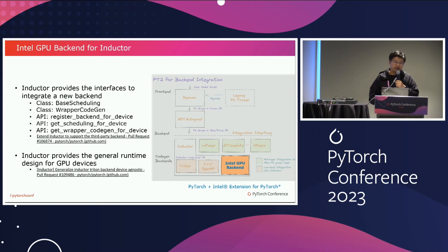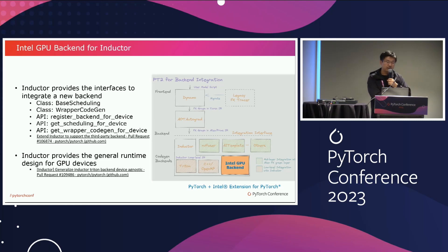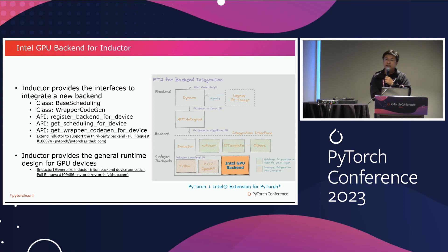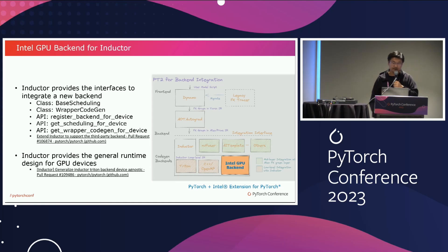Besides the two essential classes, we also provide some APIs to allow the Intel GPU back-end to register to the inductor at runtime, and you can also get the base scheduling and the wrapper codegen classes. Additionally, inductor tries to generalize the runtime design for GPU devices, since inductor has multiple device back-ends and needs to support both CUDA, Intel GPU, and other GPUs.